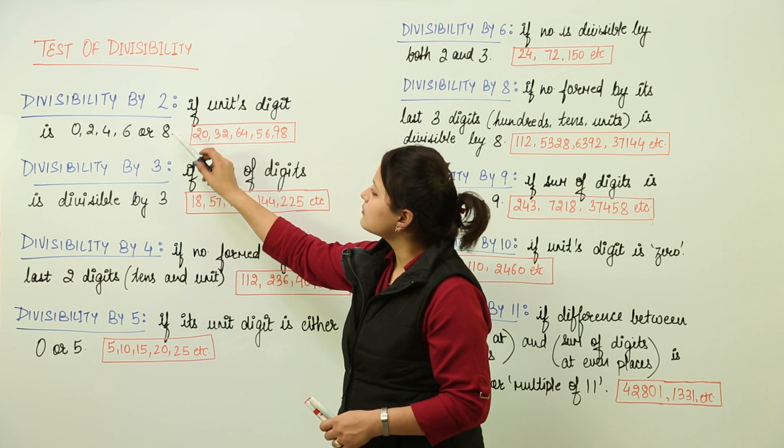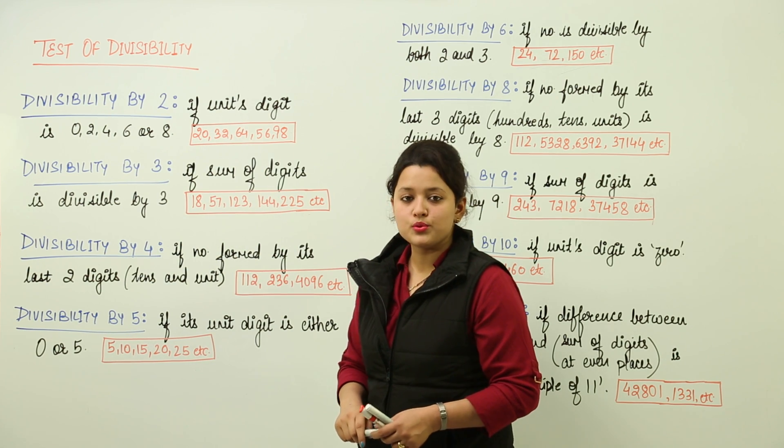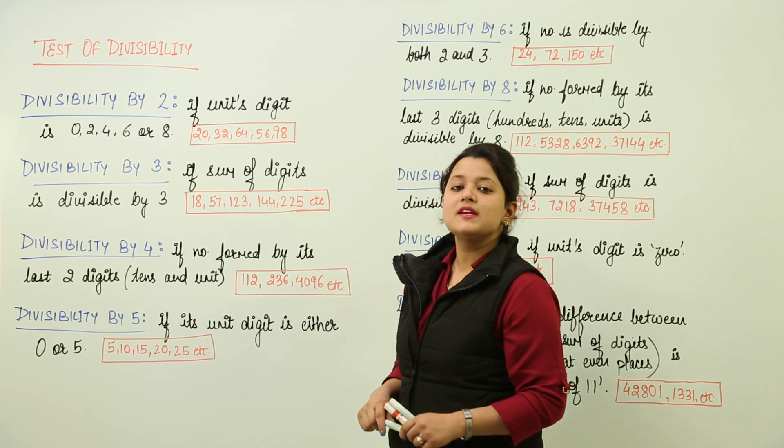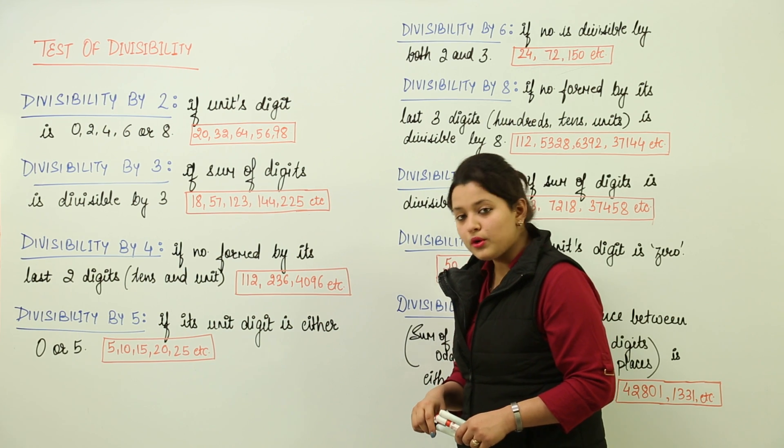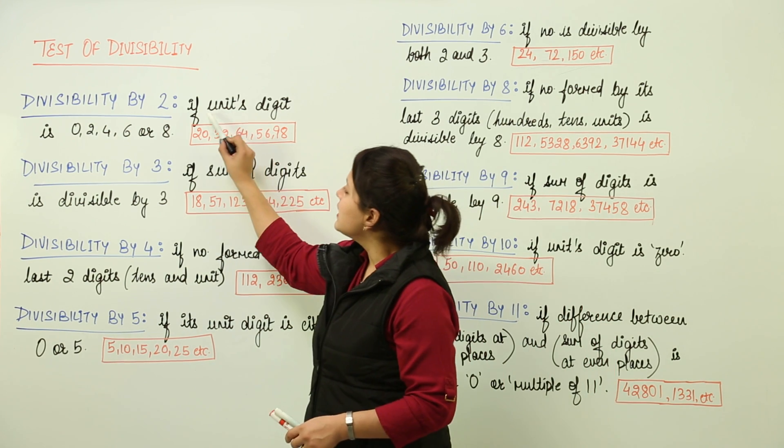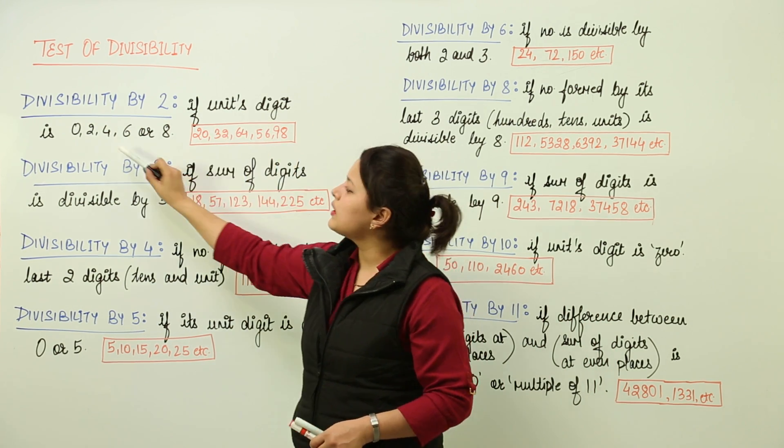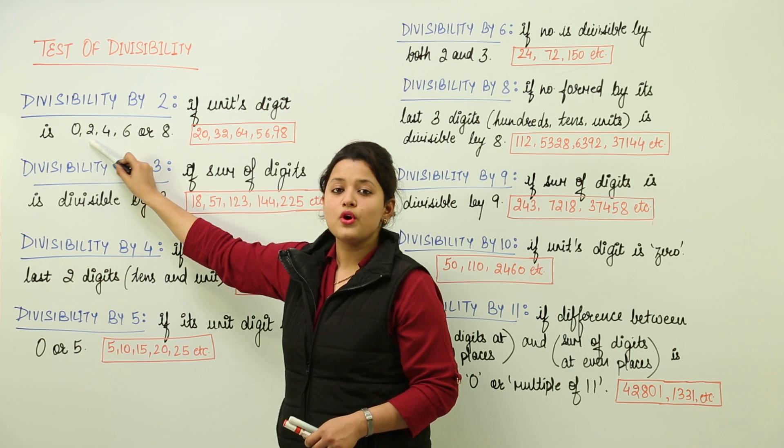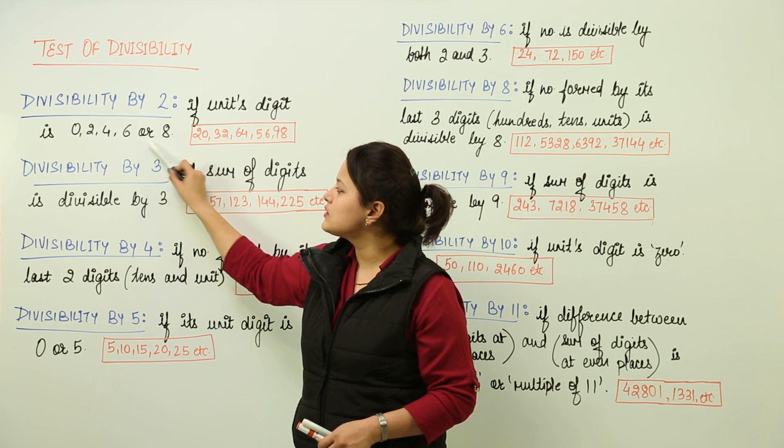Here we have the divisibility by 2. If you want to check whether a given number is divisible by 2 or not, you have to check if the units digit of the number is either 0, 2, 4, 6, or 8.